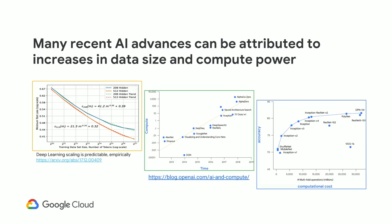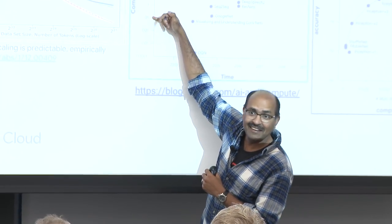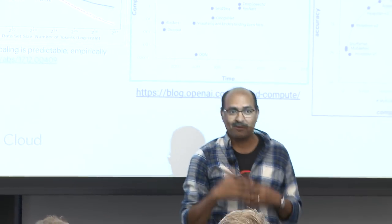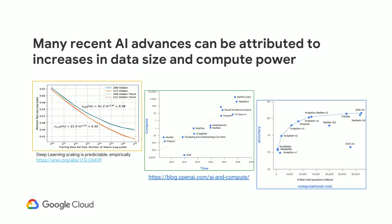The second graph shows compute needed year over year. AlexNet, which jump-started the whole deep learning idea with eight layers, needed some baseline level of compute. Neural architecture search — that's Google's AutoML — needs much more, and AlphaGo even higher. The compute needed is going up 10 times year over year. If you put these two graphs together, it turns out we now need about 300,000 times more compute than we needed just a few years ago.